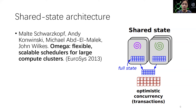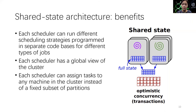Since a worker slot may be assigned by different schedulers to different tasks concurrently, conflicts may happen, where only one task gets the slot and other tasks need to be rescheduled. Omega's shared state architecture can better achieve our objectives and constraints than other previous scheduler architectures. First, each scheduler can run different scheduling strategies programmed in separate codebases for different types of jobs. Second, each scheduler has a global view of the cluster, allowing global policies such as fairness and priority to be implemented. Third, each scheduler can assign tasks to any machine in the cluster instead of a fixed subset of the partitions. These characteristics allow us to keep all the existing scheduling algorithms and make few changes within the scheduler architecture.